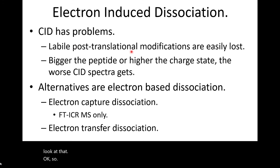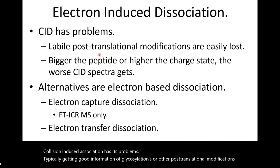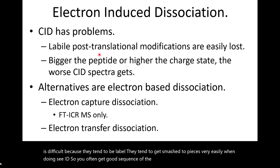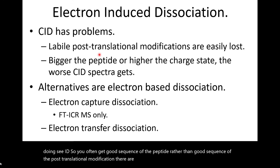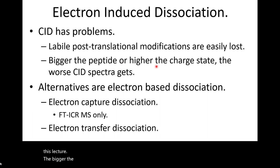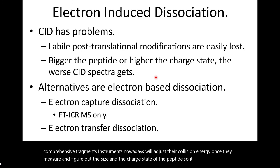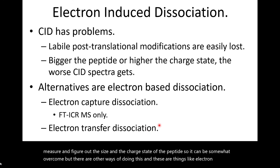Collision induced dissociation has its problems. Getting good information off glycosylations or other post-translational modifications is difficult because they tend to be labile — they get smashed to pieces easily with CID, giving good peptide sequence rather than good PTM sequence. The bigger the peptide or the higher the charge state, the more difficult it is to get comprehensive fragments. Modern instruments will adjust their collision energy once they measure the size and charge state of the peptide, but there are other approaches: electron capture dissociation and electron transfer dissociation.